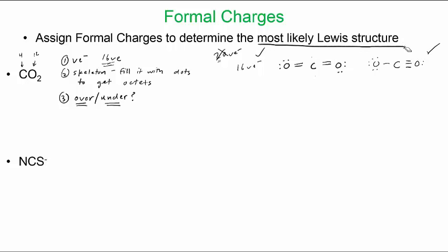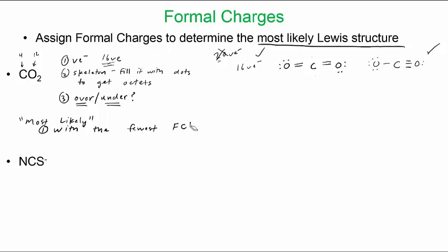Which one is the most likely Lewis structure? The most likely structure will be the one with the fewest formal charges. And if you do have formal charges, the negative formal charges should be on the more electronegative atom.